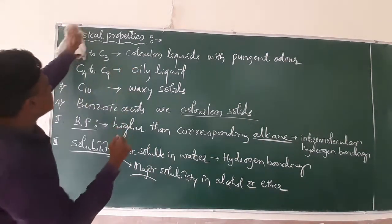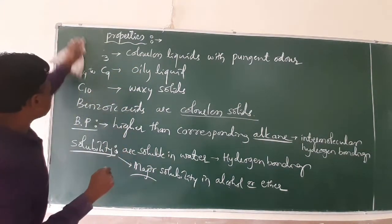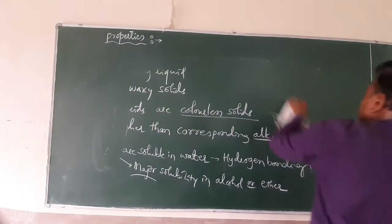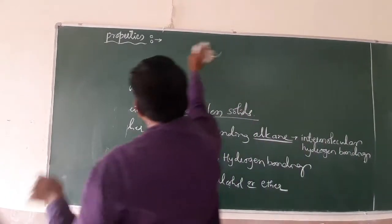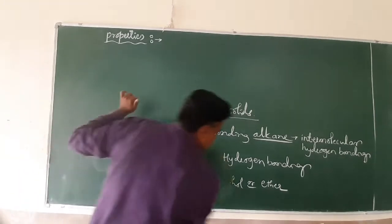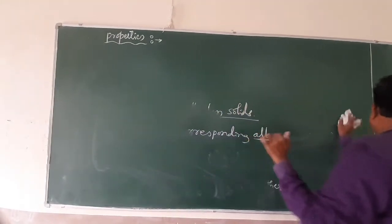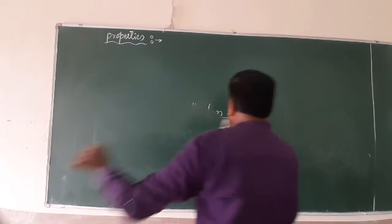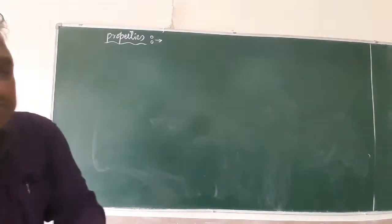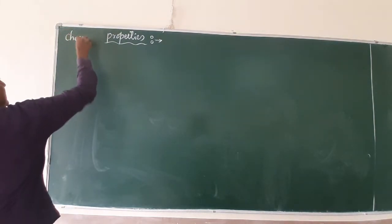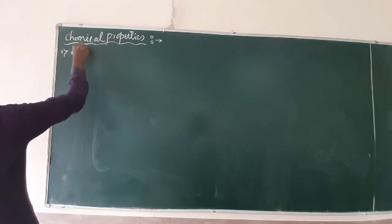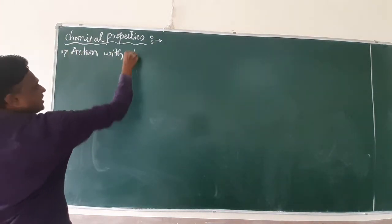Now let us look at the chemical properties of carboxylic acids, one by one as mentioned in our syllabus. The first chemical property is the action of carboxylic acids with ammonia.